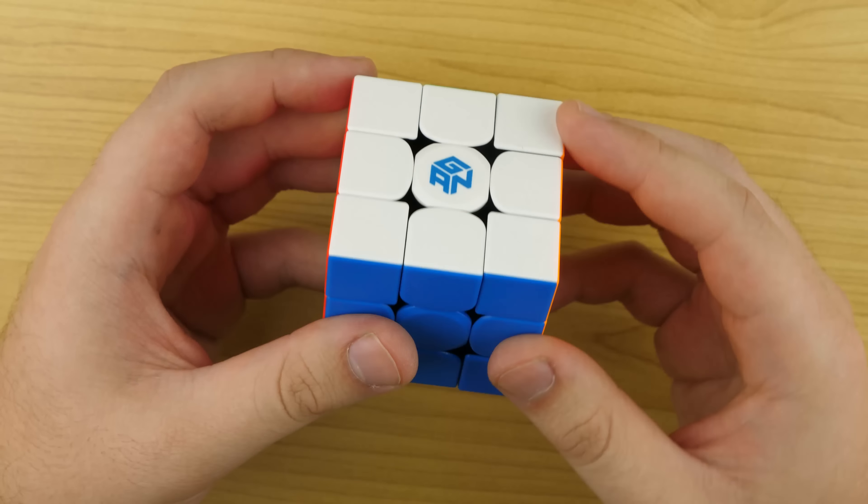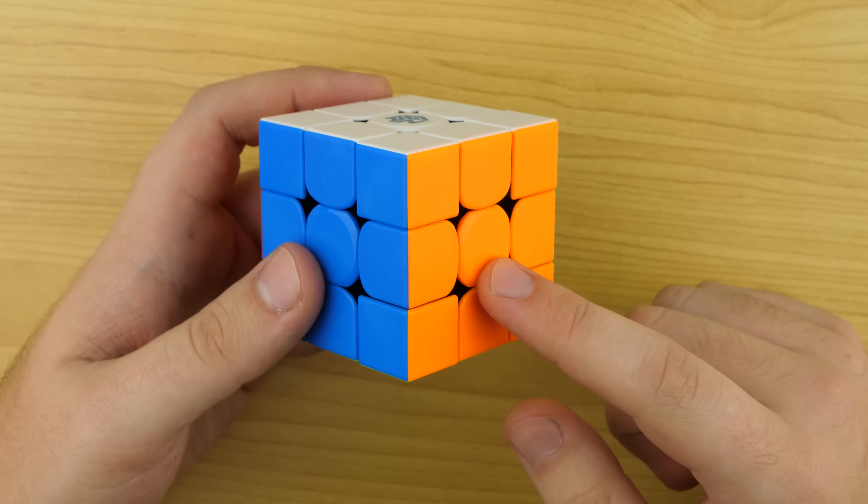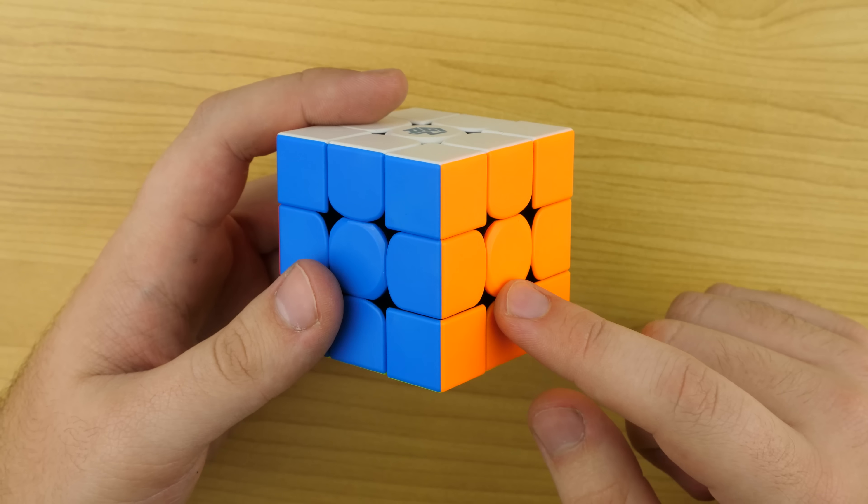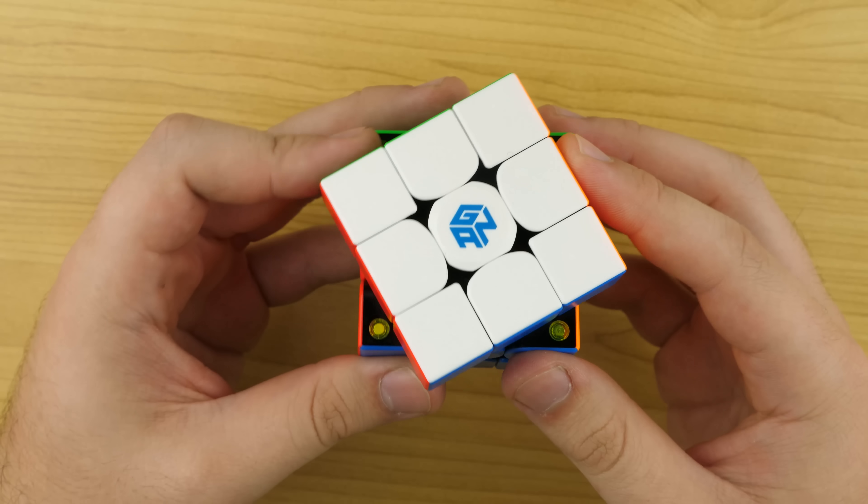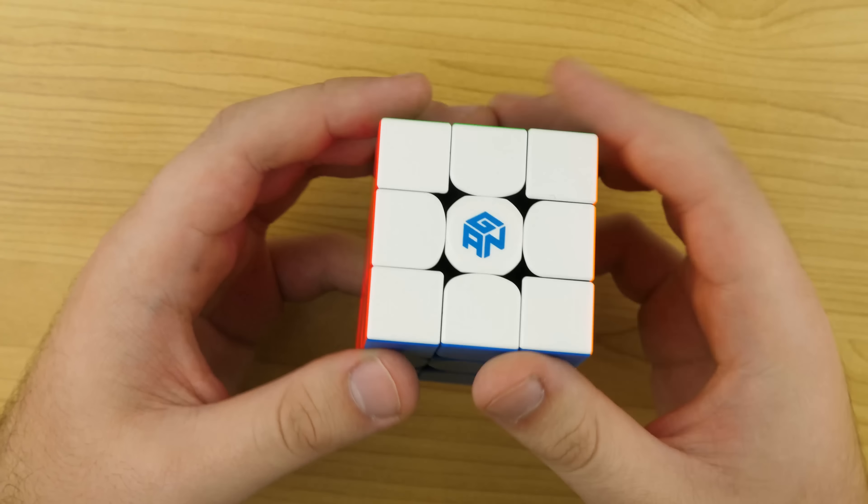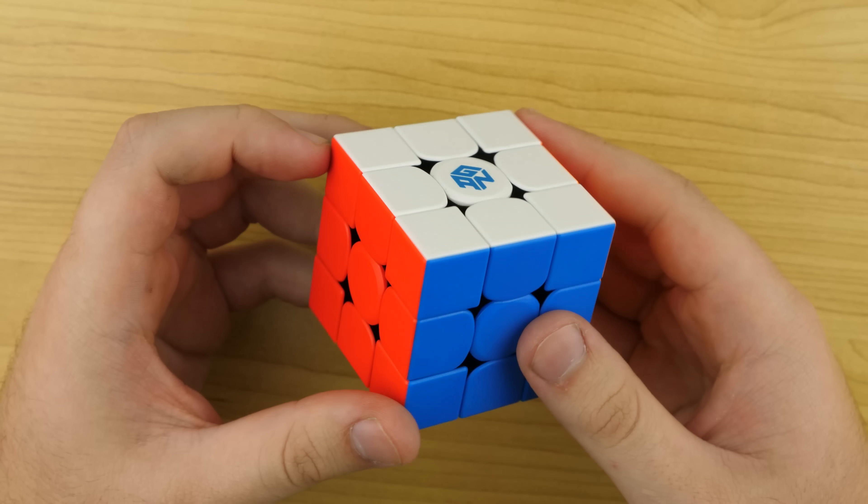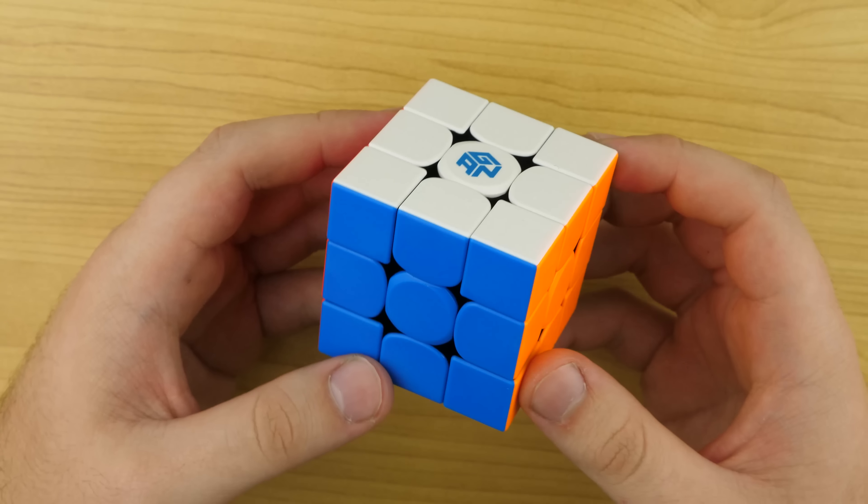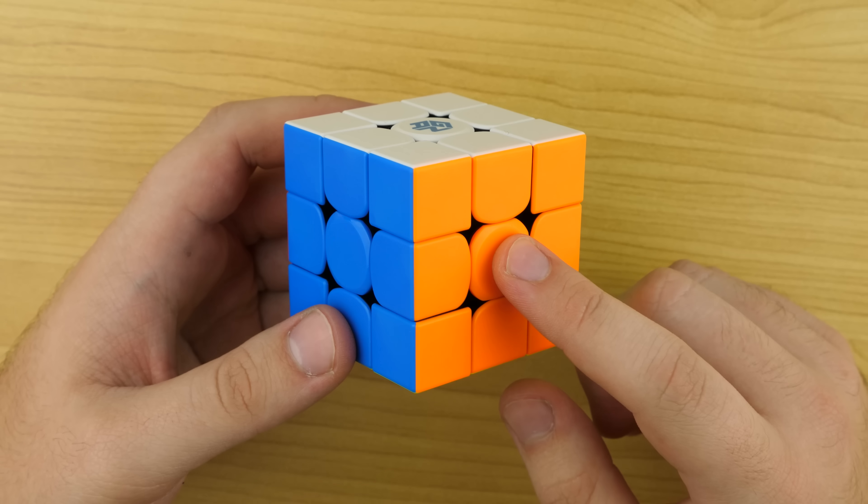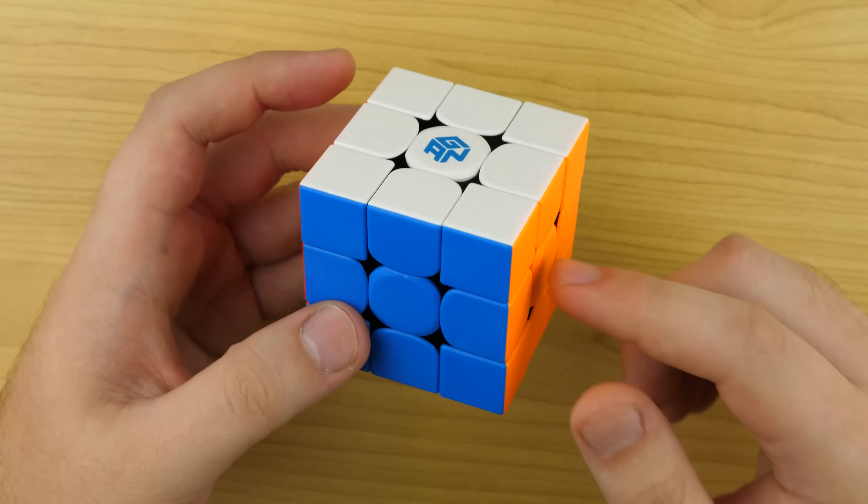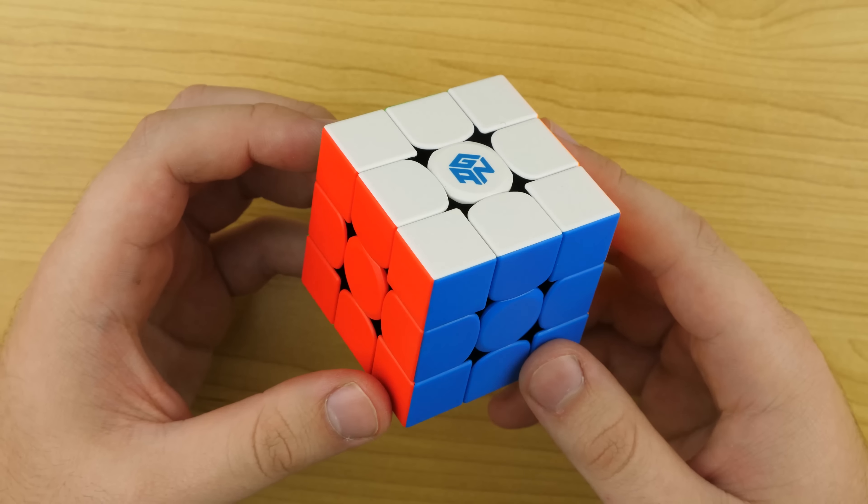So one set of magnets, about medium. I'd say most people would probably like this strength, but if you like really light magnets or really strong ones, you can't change them. So that is a bit of a bummer. As for the tensioning, it does feel pretty stock standard. So if you normally just put your cube on standard tensions, this probably is not going to be an issue for you. But if you like really loose tensions or really tight ones, then you don't really have a lot of options.